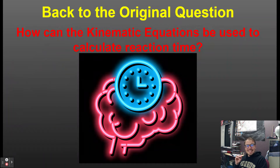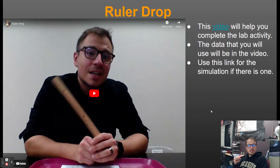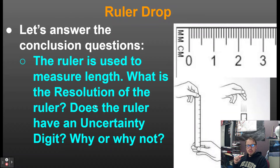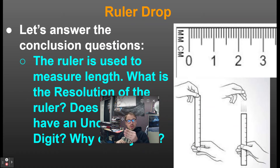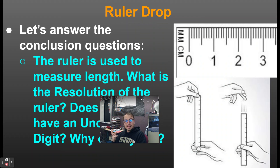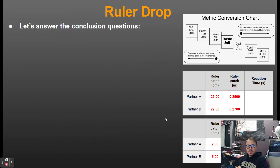These are the three types of problems for drop projectiles assuming initial velocity is zero. Now, how can kinematic equations be used to calculate reaction time? We did a lab called the ruler drop. A person holds a ruler and without any warning drops it; you try to catch it and record the displacement the ruler fell.